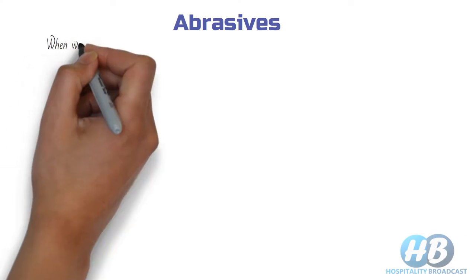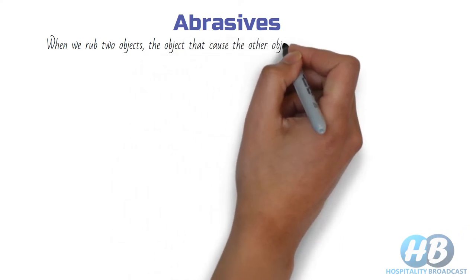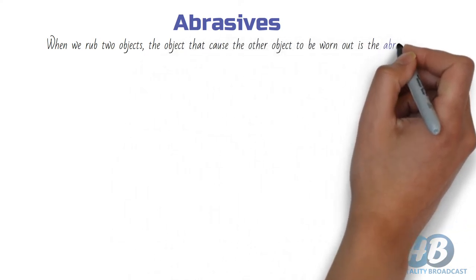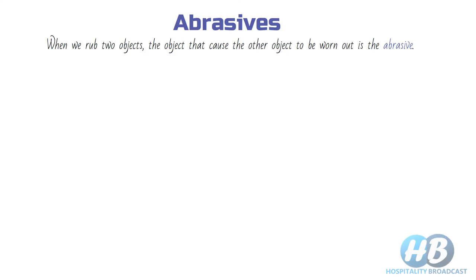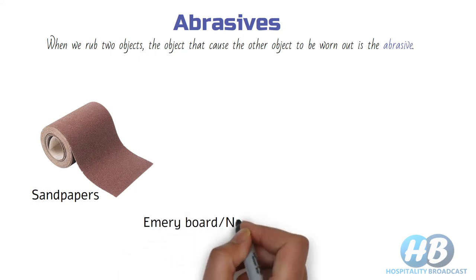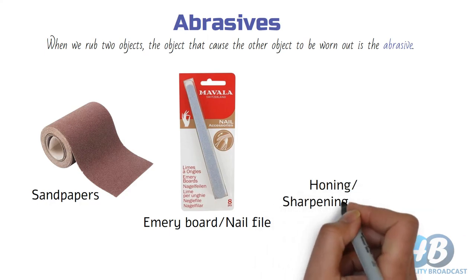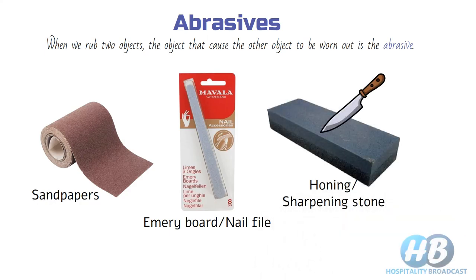Next we have abrasives. In simple words, when we rub two objects, the object that causes the other to be worn out is the abrasive. For example, we use sandstone for creating a smooth finish by removing imperfections. An emery board or nail file to smooth your nails, and a honing or sharpening stone used to sharpen knives in the kitchen, are all examples of abrasives.